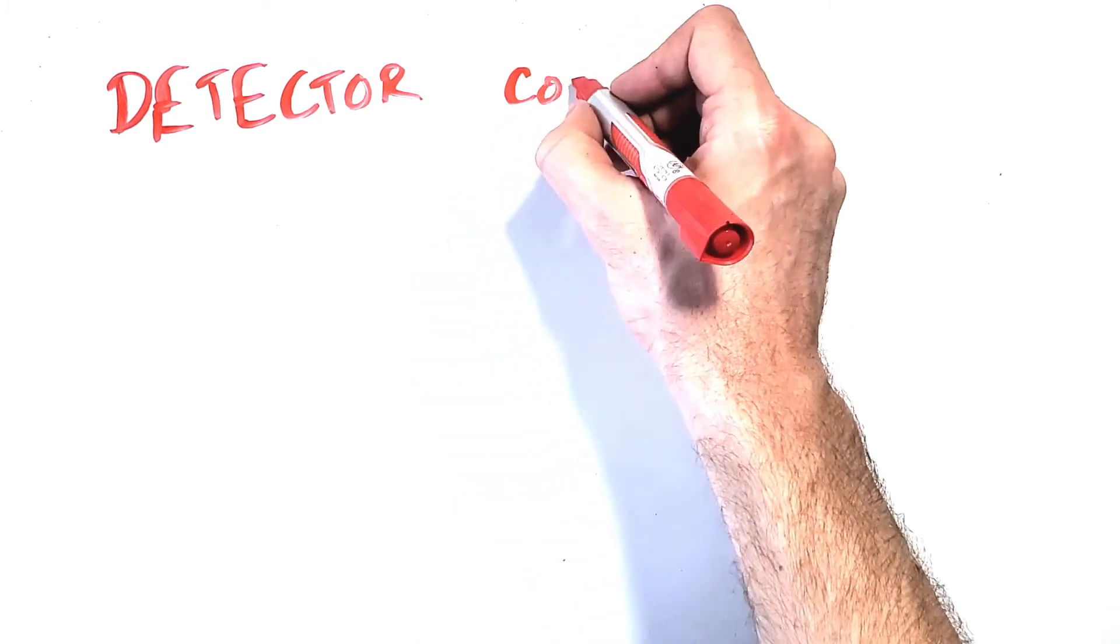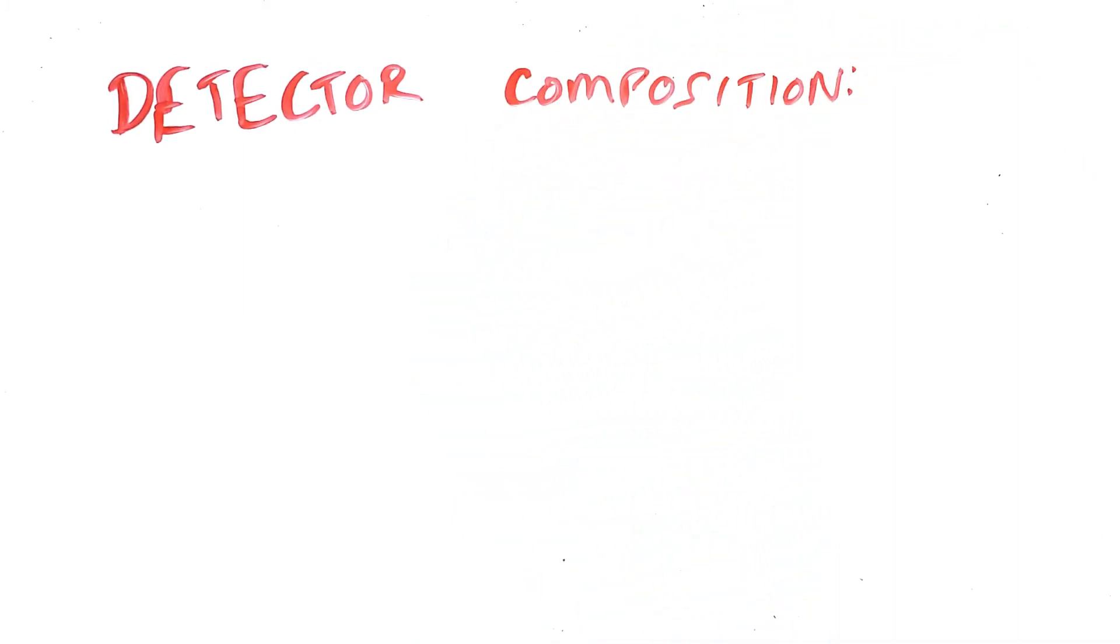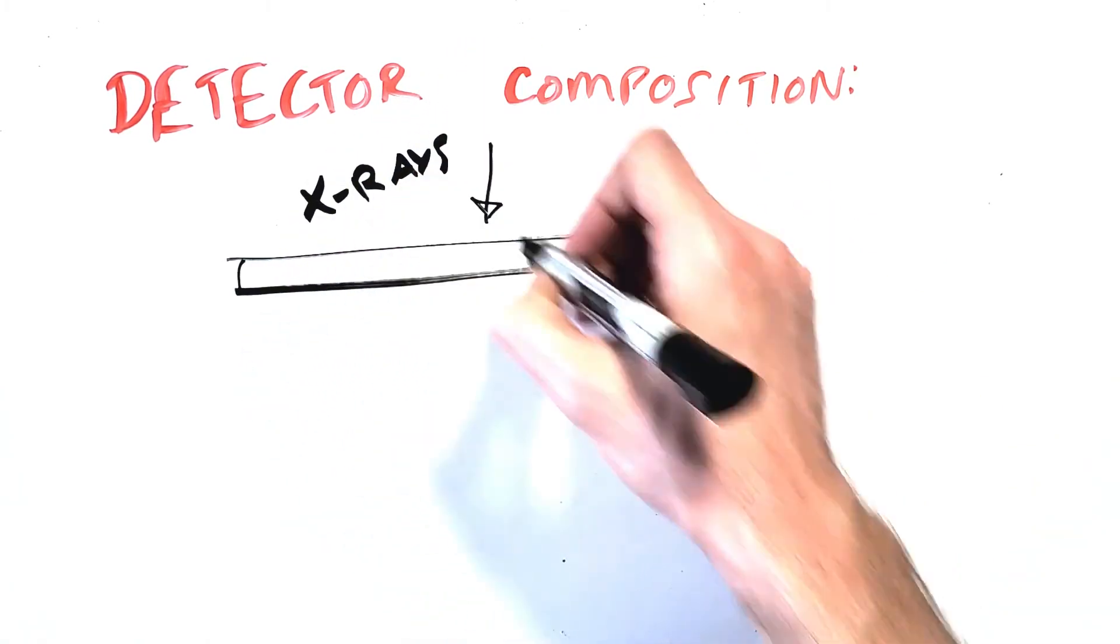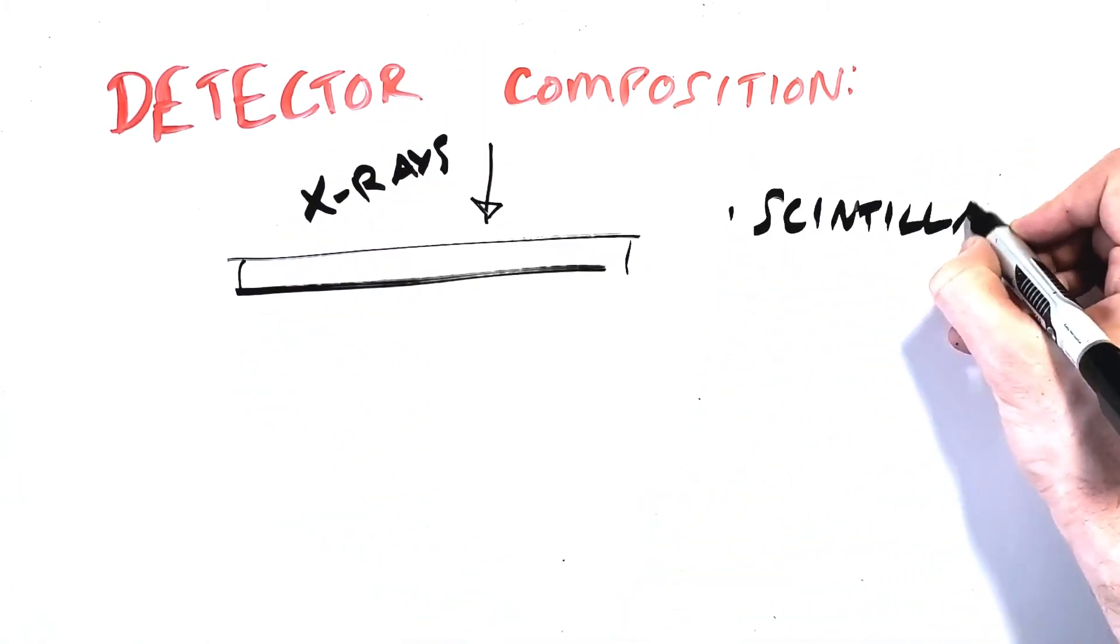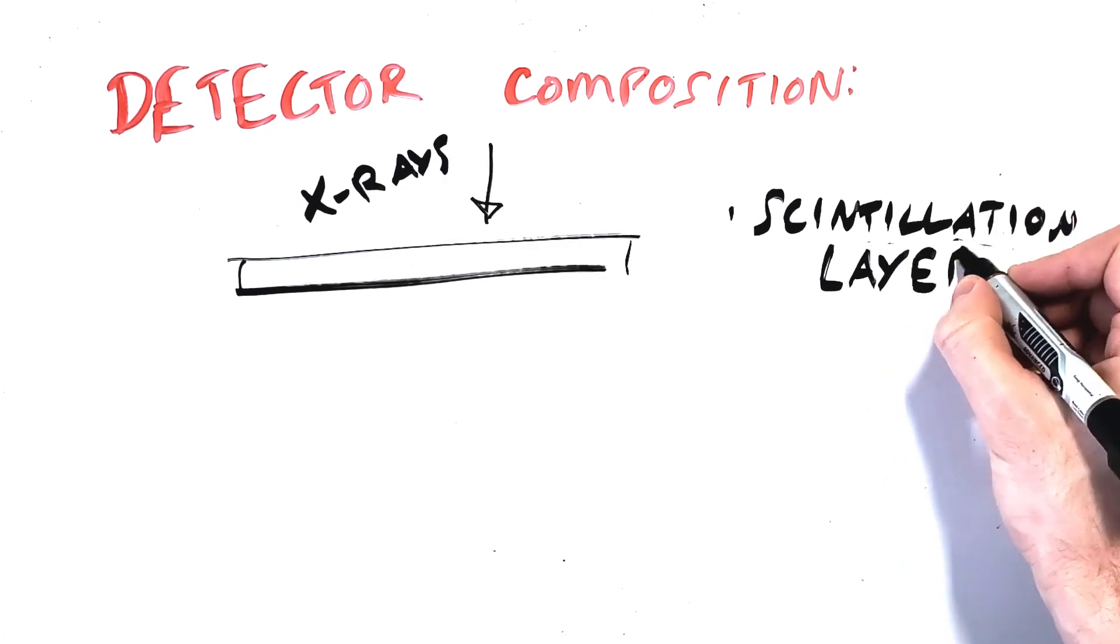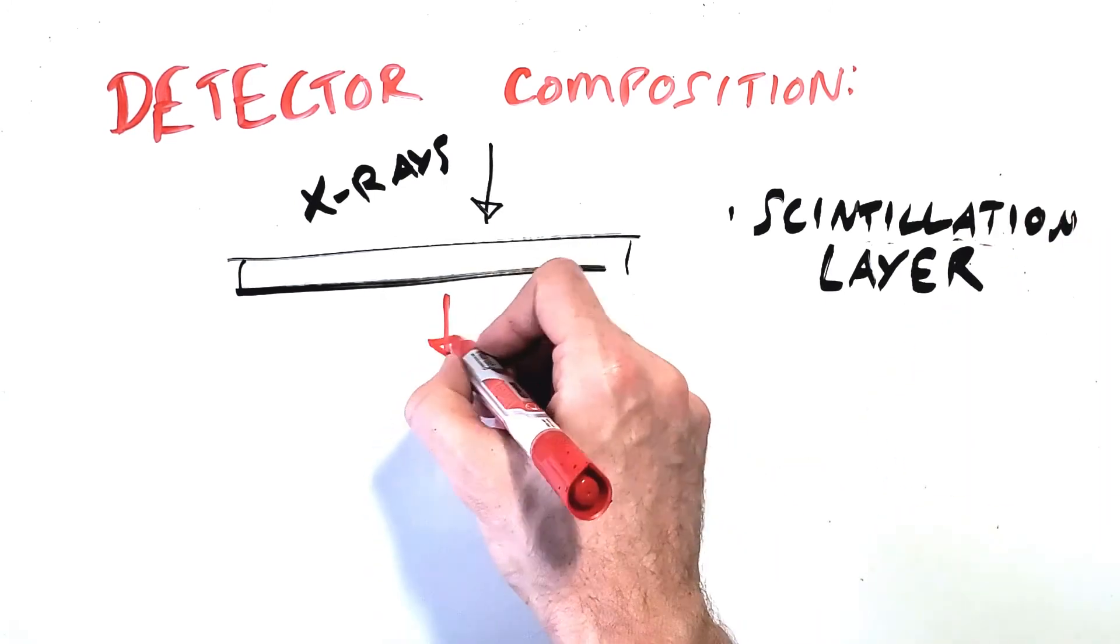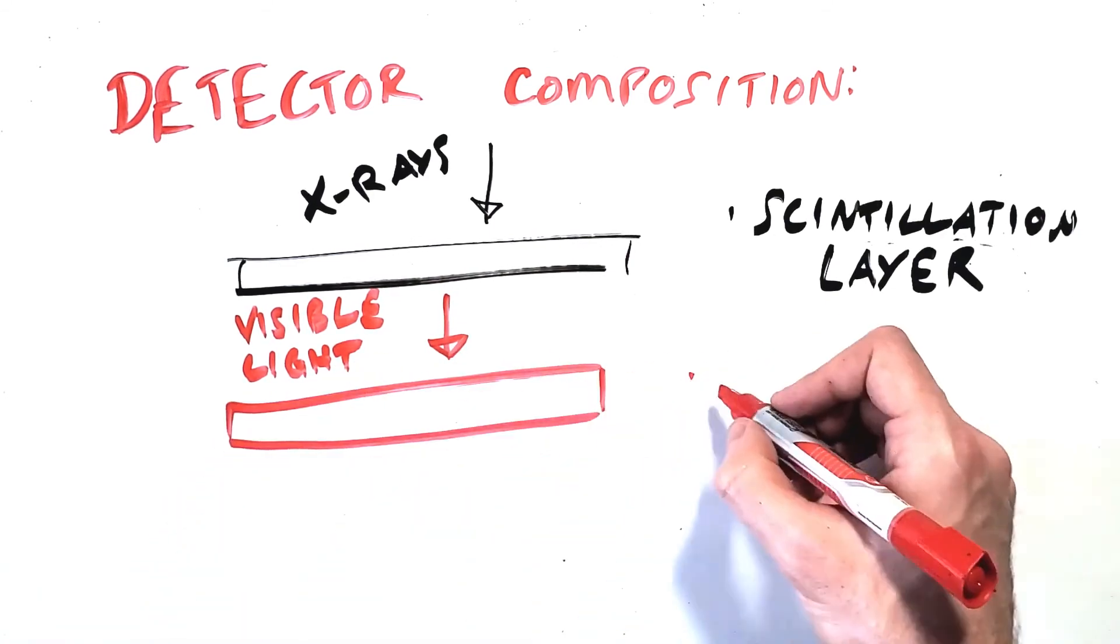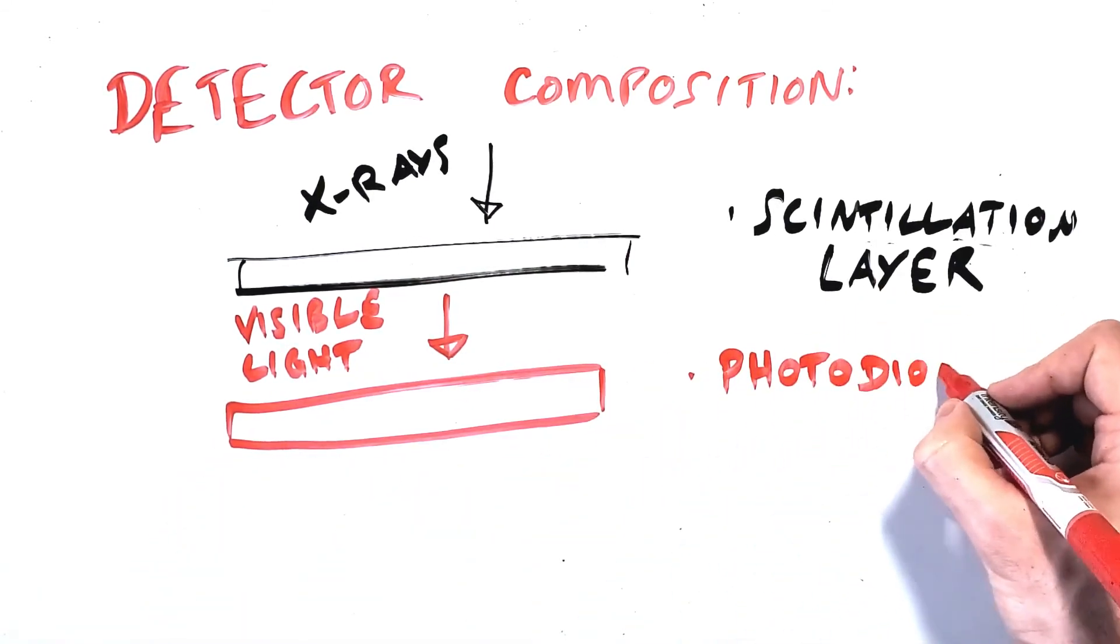The detector itself is composed of multiple rows of detector elements and the number of rows in the z-axis is the number of slices that the scanner can acquire at once. Most modern scanners have at least 64 rows and many vendors are pushing the limit of 256 rows or even higher.